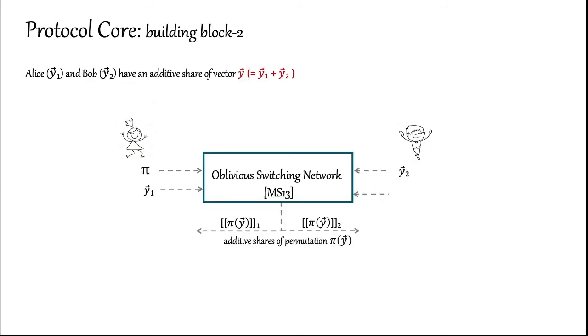To fix this problem I highlighted, we use a primitive called Oblivious Switching Network or OSN for short. What this building block gives us is this: Alice and Bob can send their additive shares y1 and y2 of a vector y to the functionality. And additionally, Alice can choose a permutation pi. As the output, Alice and Bob learn new additive shares of the permuted vector pi y. Note that Alice can correlate between her input to her output share. However, Bob is oblivious to the permutation pi and he learns a random additive share of pi y. So, he can't correlate his output to his input.